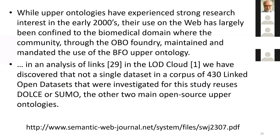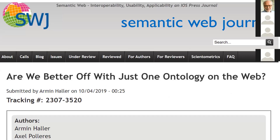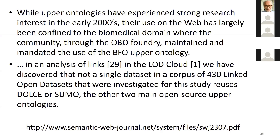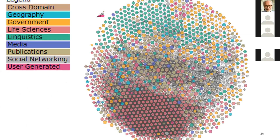BFO is massively well used in the LOD cloud — the Linked Open Data cloud — and there is no other top-level ontology which is used at all. In this paper, Armin Haller and Axel Polares established that while BFO is used overwhelmingly for life science data, there is no evidence that either Dolce or Sumo are used anywhere. The linked open data cloud is gigantic, and the red stuff — the most well-linked stuff — is the life science data. Life science was the first area to witness massive use of ontologies and remains where they are most systematically used.